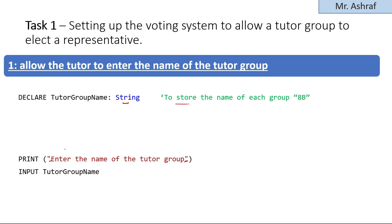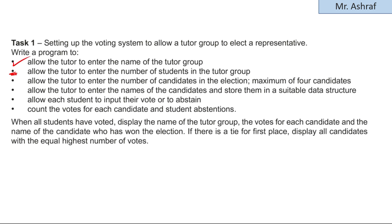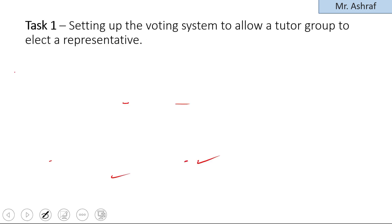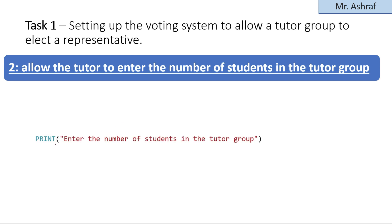That covers the first point. Now for the second point: allow the tutor to enter the number of students in the group. Again, you prompt the tutor by displaying a message on screen. PRINT "Enter the number of students in the tutor group" — this is a clear output message and you will be awarded one mark if the question asks you to prompt the user clearly.